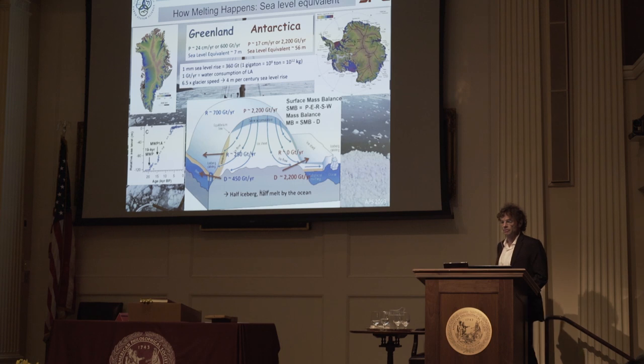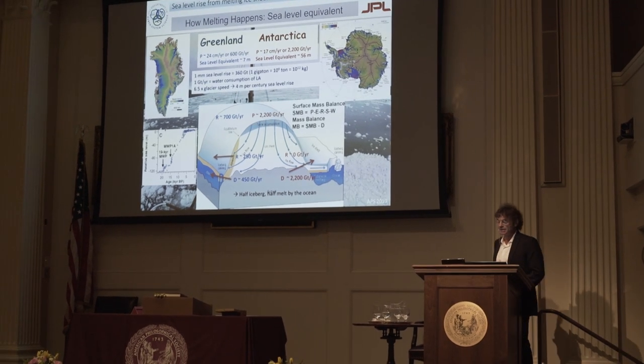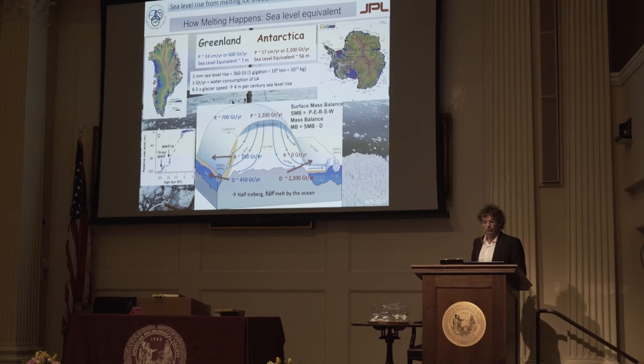I don't have to tell this educated audience that there's a lot of ice locked up in the ice sheets — about 56 meters of sea level equivalent in Antarctica and 7 meters in Greenland. We like to talk about the change in mass of the ice sheets in terms of gigatons — billion tons. There are tens of thousands of billion tons of mass in the Antarctic. 360 gigatons of land ice dumped into the ocean raises global sea level by one millimeter. One gigaton is a sizable amount of water on the human scale — about the level of fresh water consumption of a big city like Los Angeles or Philadelphia. But of course there's a lot more than that in the ice sheets.